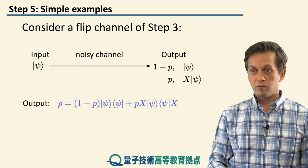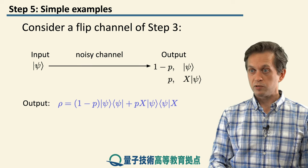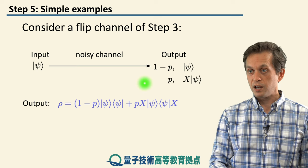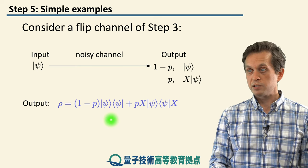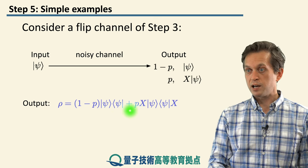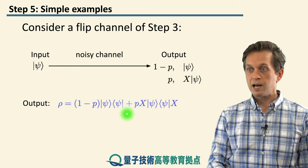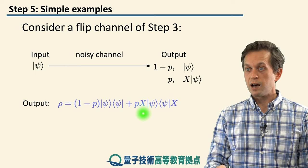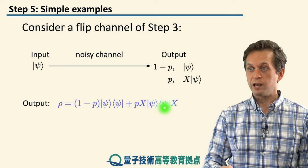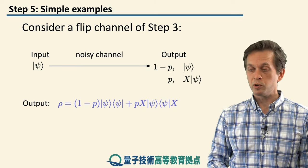So again, we write down what's the output. We have to write it in the matrix form, so in the density matrix formalism, and it's written as 1 minus p, the projector onto the state psi, plus probability p times the projector onto the other state where we are applying the Pauli-X operator to the pure input.